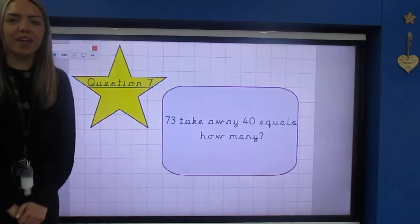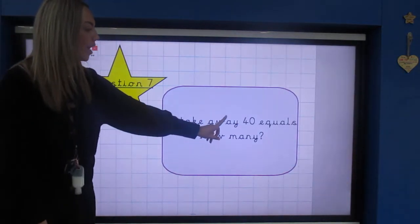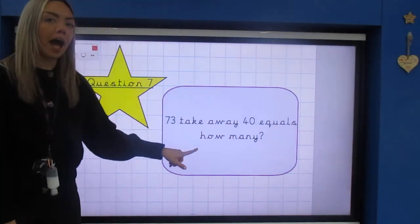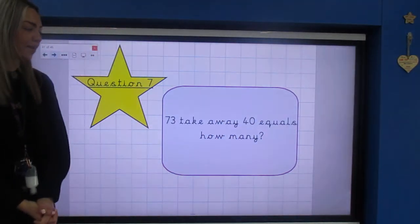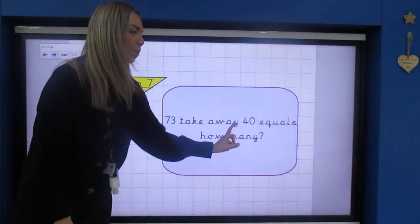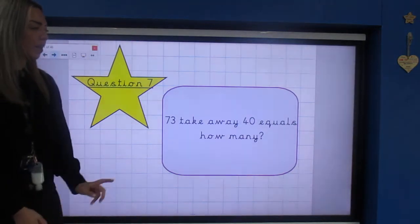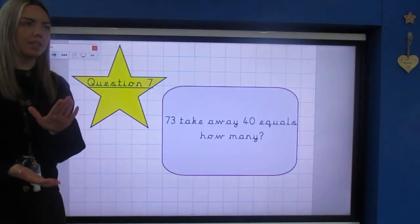Number seven, question number seven: 73 take away 40 equals how many. A little clue with this one, word problem, turn it into a number problem.